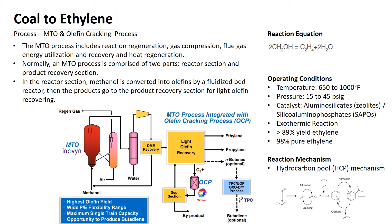In the reactor section, methanol is converted into olefin by a fluidized bed reactor, and the product goes to the product recovery section for light olefin recovery, in our case ethylene. The reactor is operated at a temperature of 650 to 1000 Fahrenheit under a pressure of 15 to 45 PSIG. The common catalysts used are silicoaluminophosphate and also aluminosilicate zeolites. Overall this reaction is exothermic, and over 89% yield of ethylene can be produced via the MTO reaction, with almost 90% pure ethylene obtained as a final product.